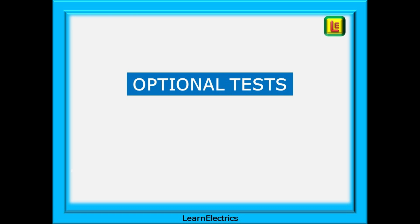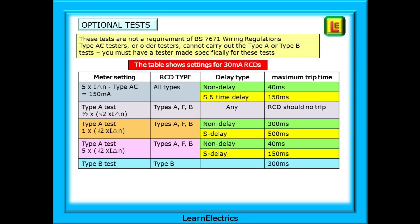There are optional tests that can be carried out, but they are not a requirement of the wiring regulations. This table shows the optional tests available. These are not required by BS 7671, but results should be noted in the remarks column of the schedule or on the back of the certificate. Type AC testers or older testers cannot carry out type A or type B tests — you must have a tester made specifically for these optional tests.